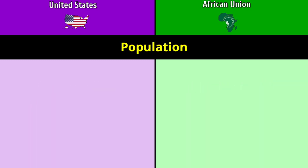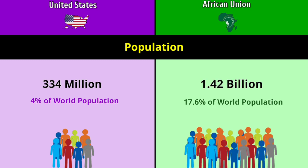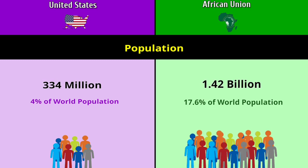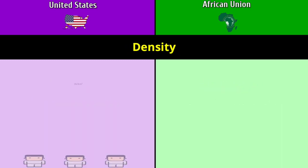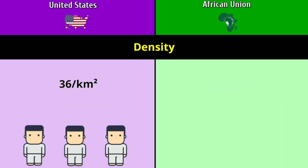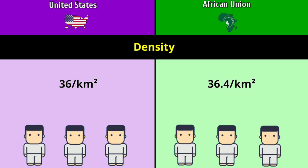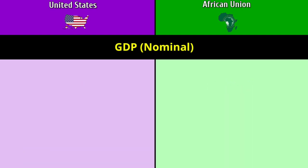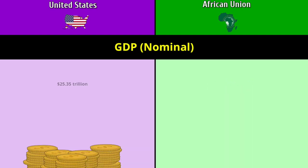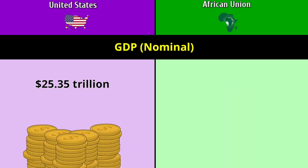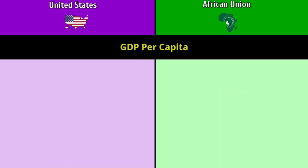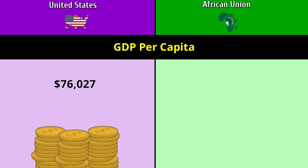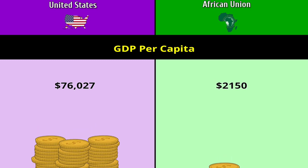Population: 334 million versus 1.42 billion. Density: 36 per square kilometer versus 36.4 per square kilometer. GDP: a phenomenal 25.35 trillion dollars for the US versus 2.96 trillion dollars for the African Union. GDP per capita: seventy-six thousand and twenty-seven dollars versus two thousand one hundred and fifty dollars.